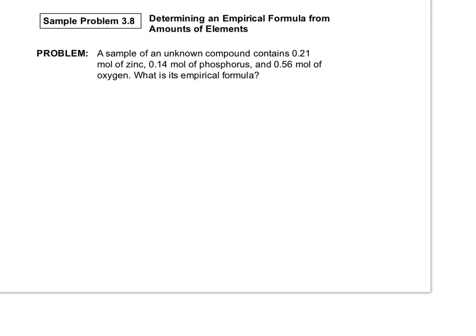Sample problem 3.8: We have a sample of an unknown compound containing 0.21 moles of zinc, 0.14 moles of phosphorus, and 0.56 moles of oxygen. What is its empirical formula?